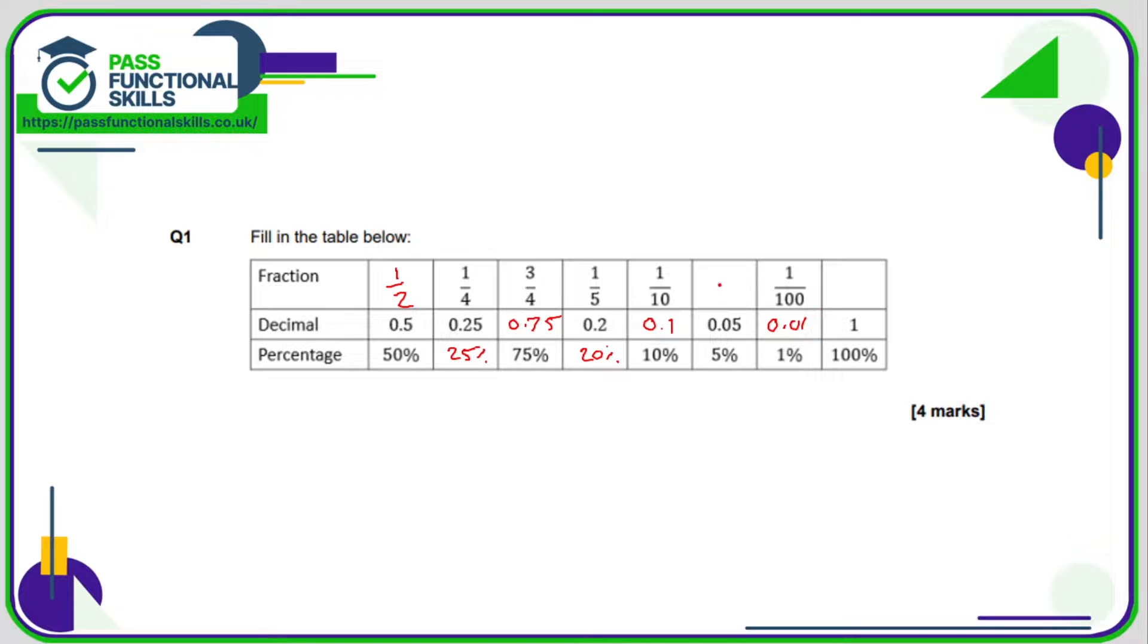Now we just need to fill in the fractions for 5% and for 100%. Well 100% is the full amount so as a fraction that's just one whole which we write as 1 over 1. But 5% means out of 100. So 5% means 5 out of 100. So there's my fraction but can I simplify it? And the answer is yes I can. I can divide both the top and the bottom by 5. 5 divided by 5 is 1 and 100 divided by 5 is 20. So 5% is 1/20 as a fraction.